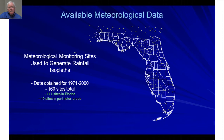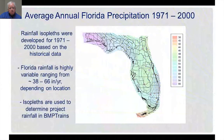We also looked at some sites immediately outside of the State of Florida because our intention was to develop isopleths, and we needed boundary data to complete them. We generated data for all sites shown — 160 sites in total — over the period from 1971 to 2000. Using that data, we developed the rainfall isopleths shown on this figure.